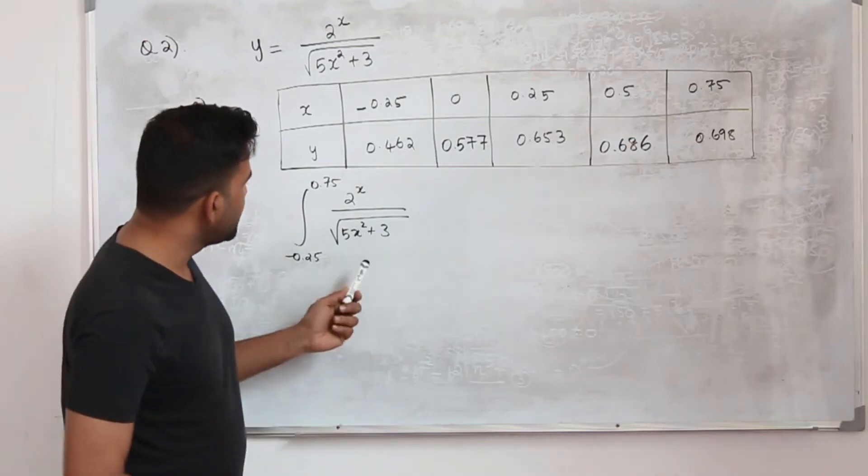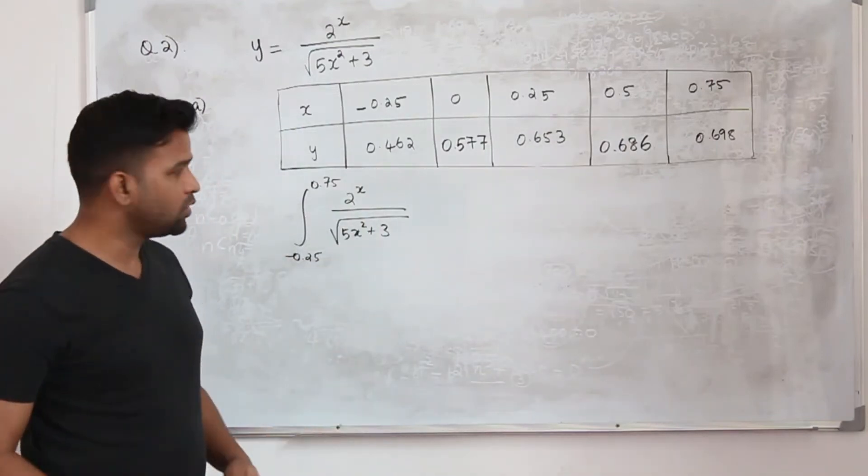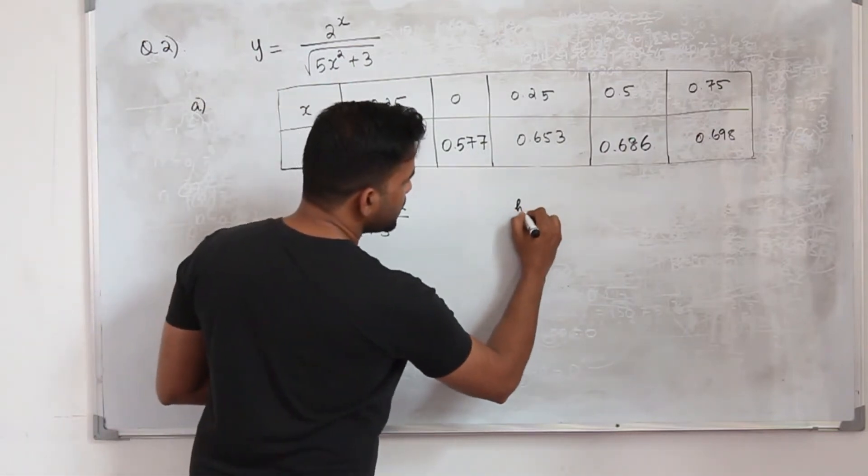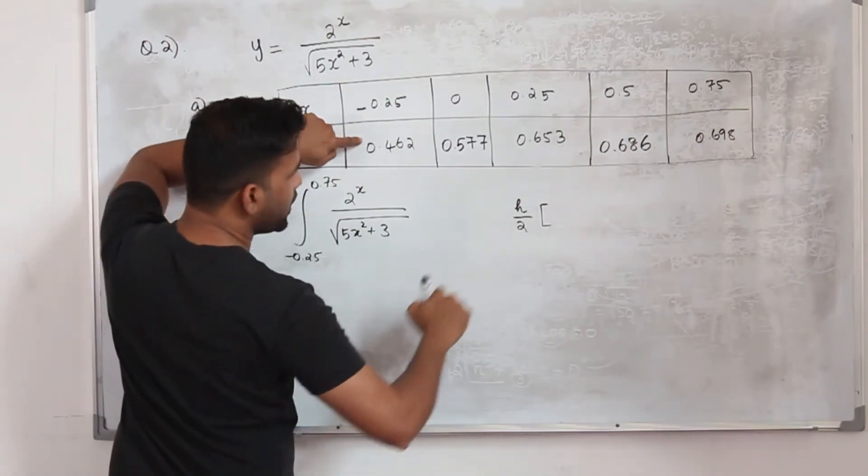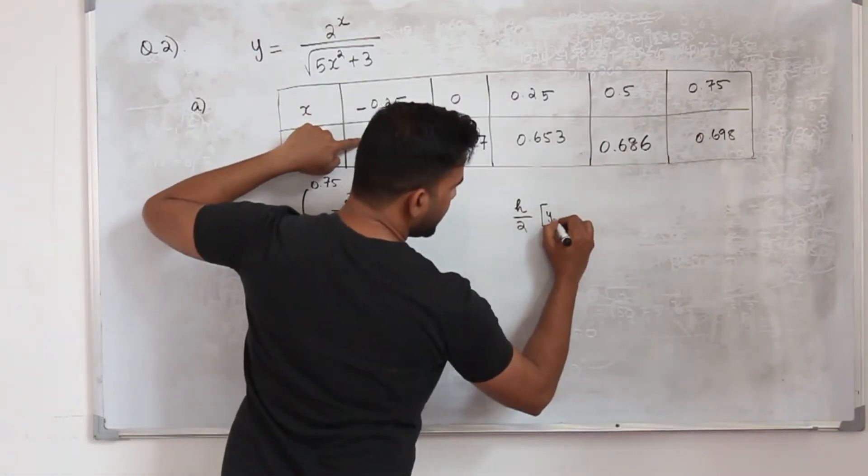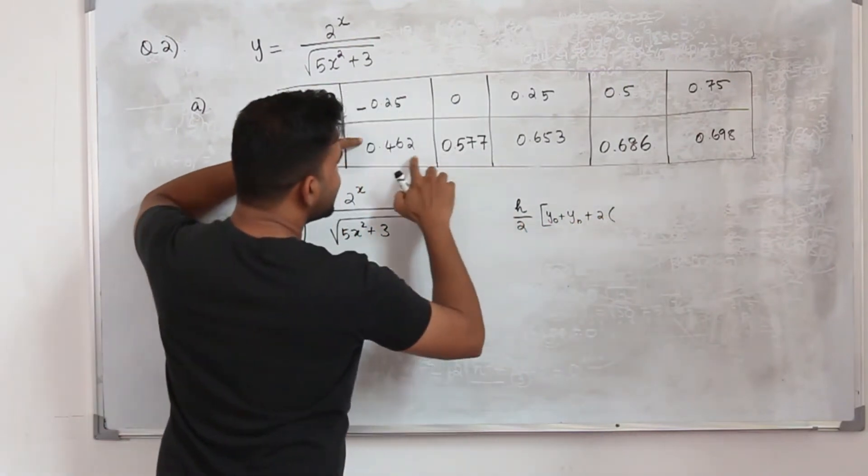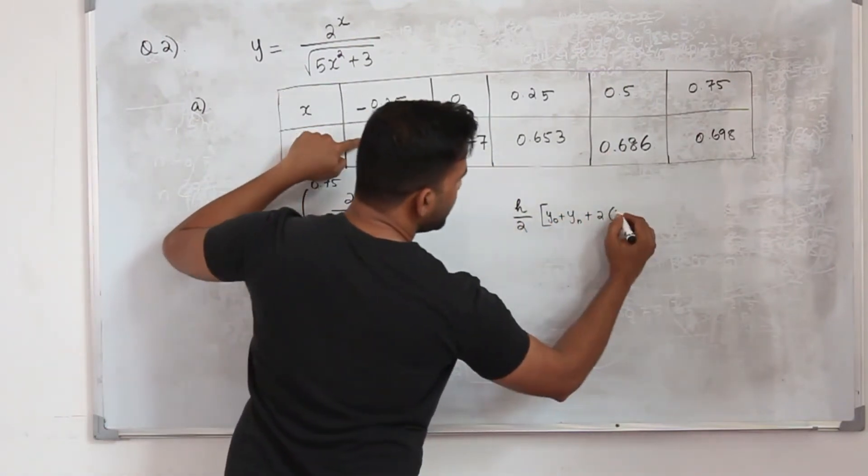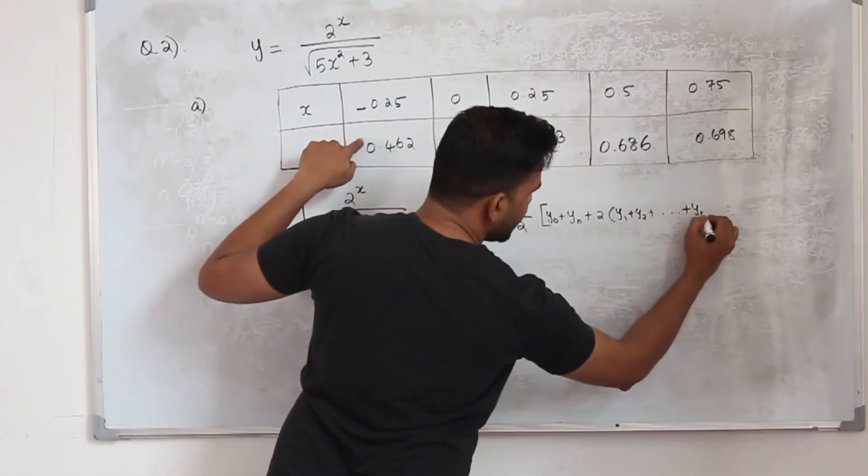In part B, they want you to find the value of this definite integral by using the trapezium rule. So the trapezium rule is simple: h upon 2 times the first value of y and the last value, y0 plus yn, plus 2 times sum of all the rest of the y values, y1, y2, etc.